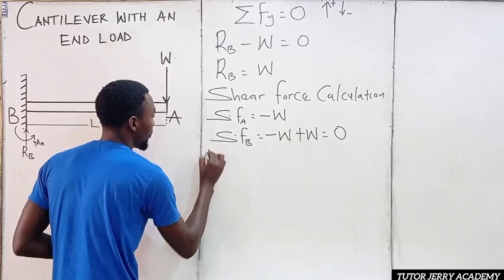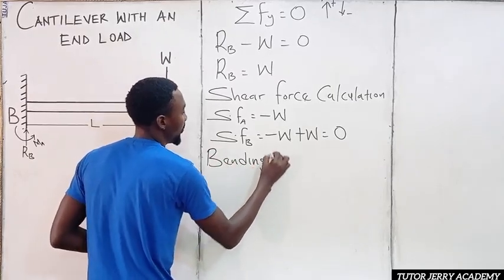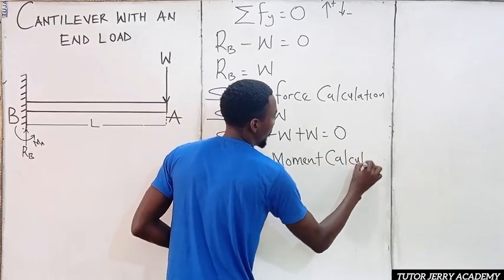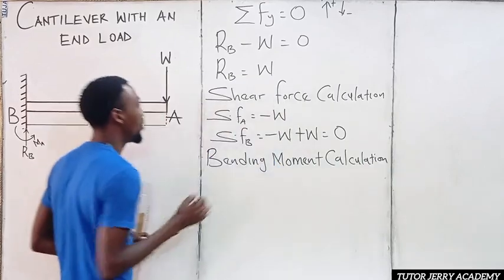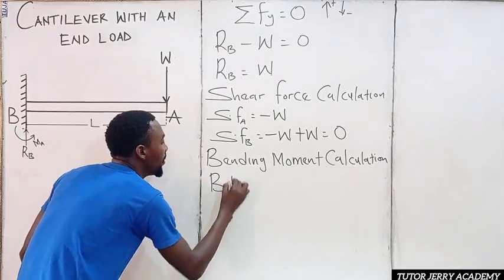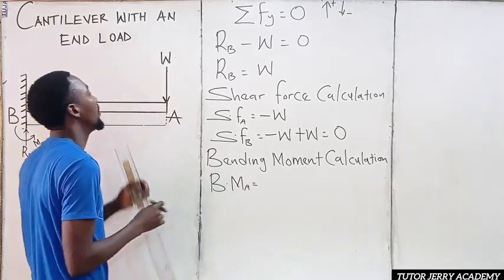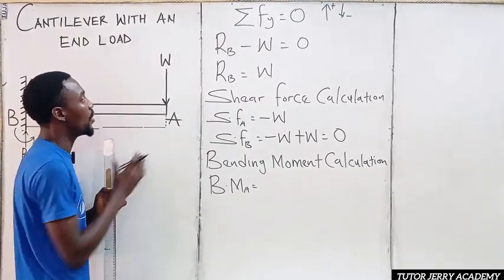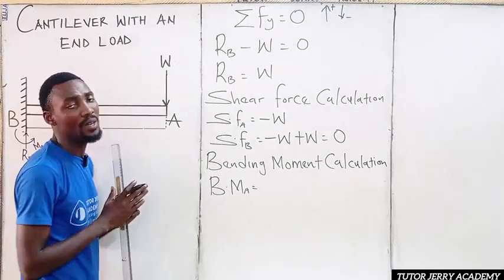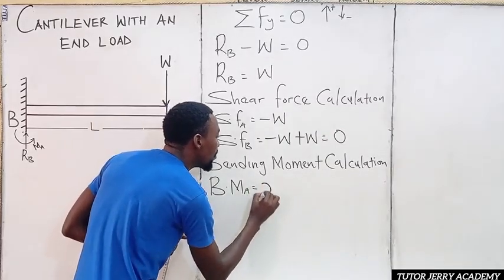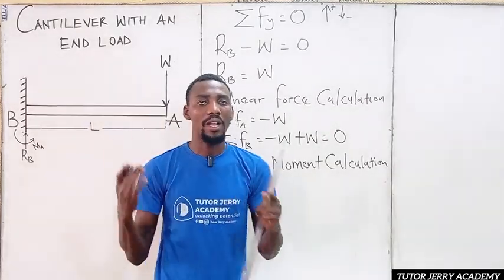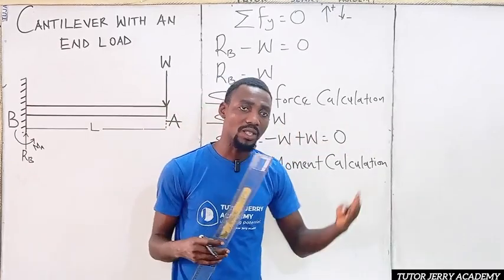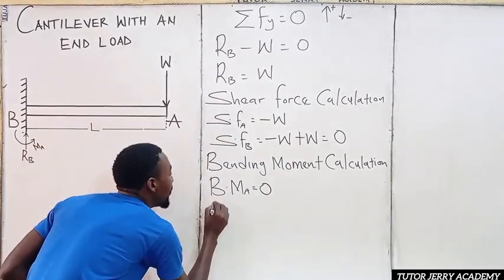Now let's do the bending moment calculation. The bending moment at point A: we know that moment is force times perpendicular distance. Starting at point A looking to the right, we have a force but no perpendicular distance, so the bending moment at point A equals zero. As stated in our introduction, the bending moment at the free end of a cantilever beam is always zero.